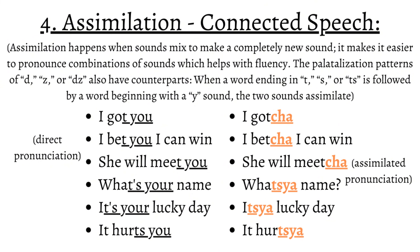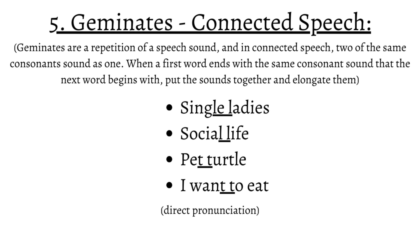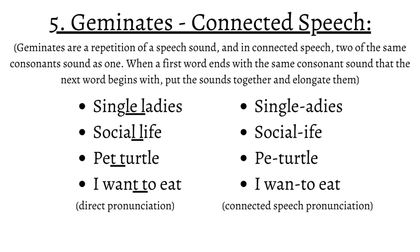The last category of English connected speech is geminates. By definition, geminates are a repetition of a speech sound, and in connected speech, two of the same consonants sound as one. When a first word ends with the same consonant sound that the next word begins with, we put the sounds together and elongate them. We say only one sound of that letter. Some examples are 'single ladies,' 'social life,' 'pet turtle,' 'I want to eat.' The differing pronunciation will remove the repetitive consonant sounds: 'single ladies,' 'social life,' 'pet turtle,' 'I want to eat.'